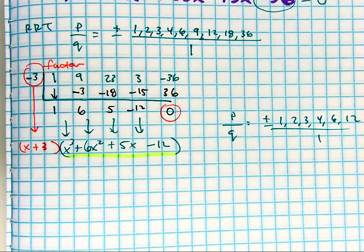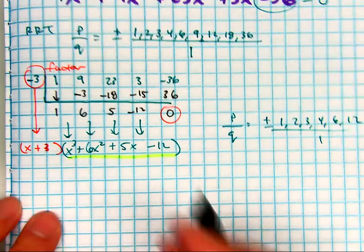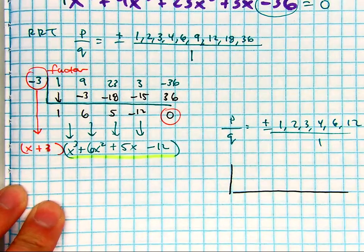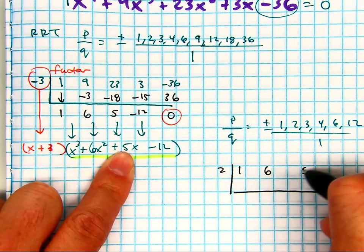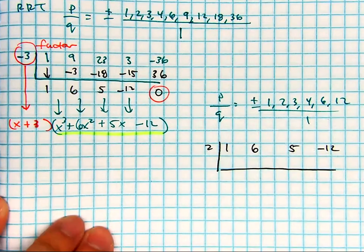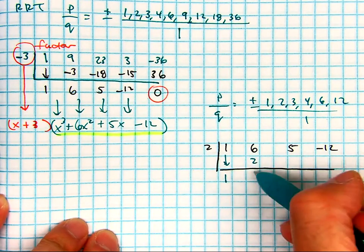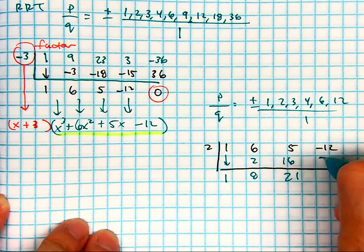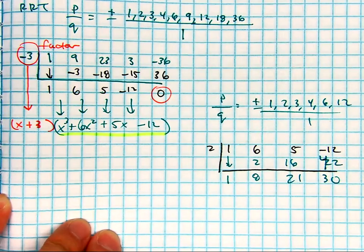What number do you want to pick? 2? All right, let's try 2. Now I'm going to use 1, 6, 5, and negative 12. Bring this down, multiply, add, multiply, add, multiply, 42. And that gives me 30. Didn't work.